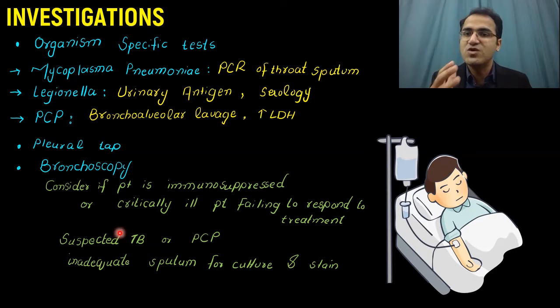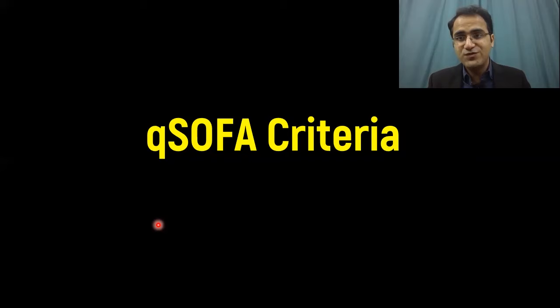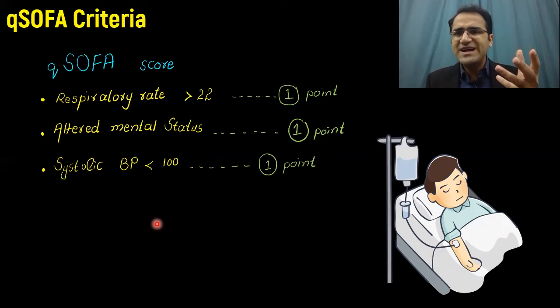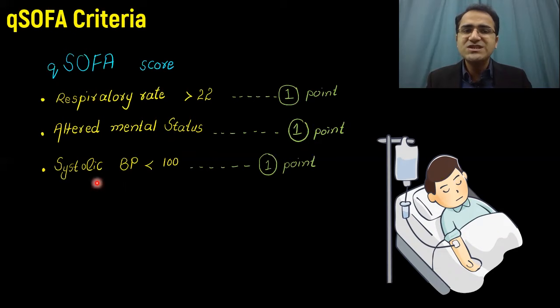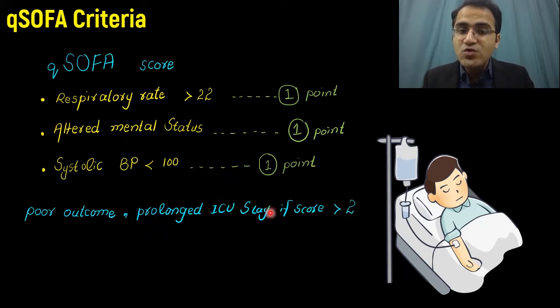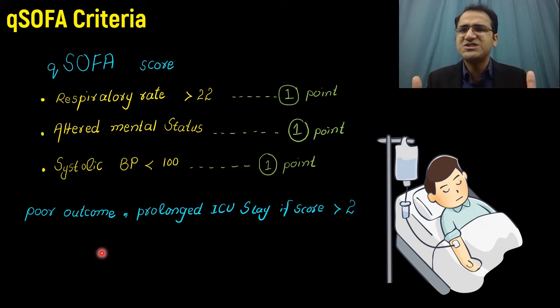The qSOFA criteria is used in the emergency setting to quickly classify whether a patient needs immediate ICU care. It uses three parameters: respiratory rate greater than 22 (1 point), altered mental status (1 point), and systolic BP less than 100 (1 point). If the patient scores greater than 2, they have a poor outcome, higher mortality, and prolonged ICU stay. qSOFA is a non-specific criteria to quickly identify high-risk patients.